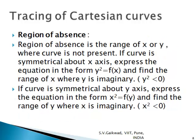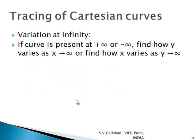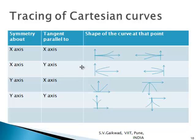To find the region of absence, determine which parts of the x- or y-axis the curve is absent from. If symmetry is about the x-axis, express the equation as y² = f(x) and find the range of x where y² < 0, i.e., y is imaginary. If symmetry is about the y-axis, express as x² = f(y) and find where x² < 0. Finally, if the curve exists at infinity, find how y varies as x → ∞, or how x varies as y → ∞.